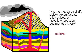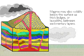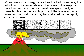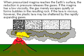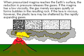When pressurized magma reaches the earth's surface, the gases in it are released. If the magma has a low viscosity or thickness, the gas can escape easily. If the lava is viscous, however, the thick lava may be shattered by the pressure of the gases.